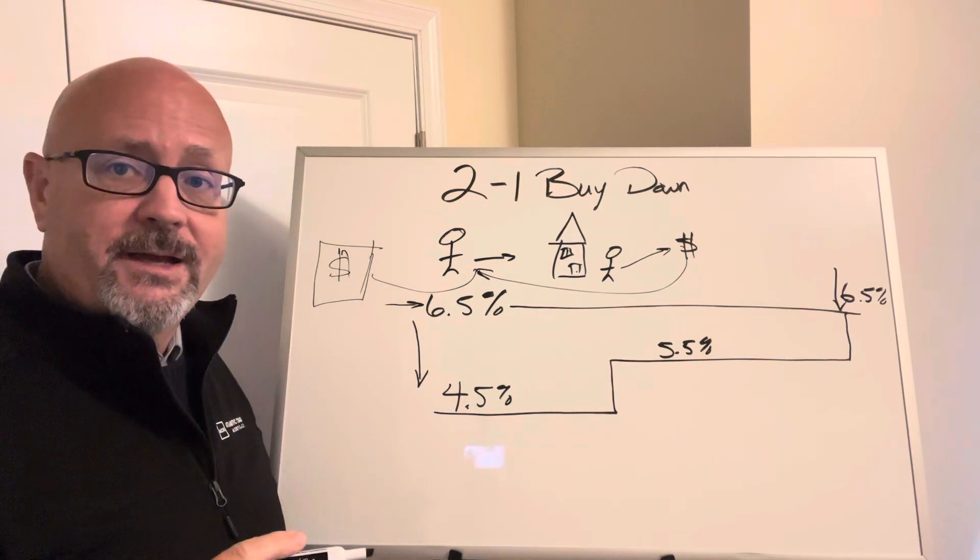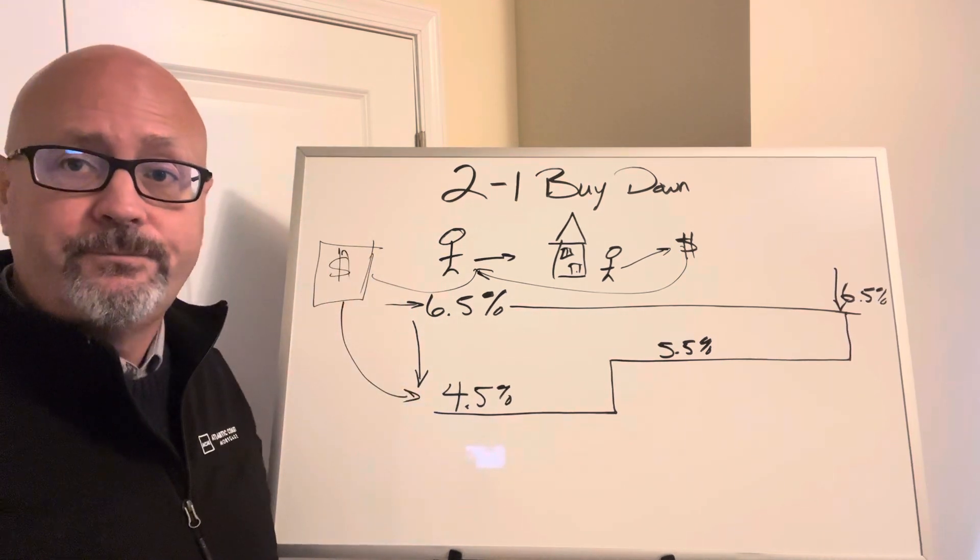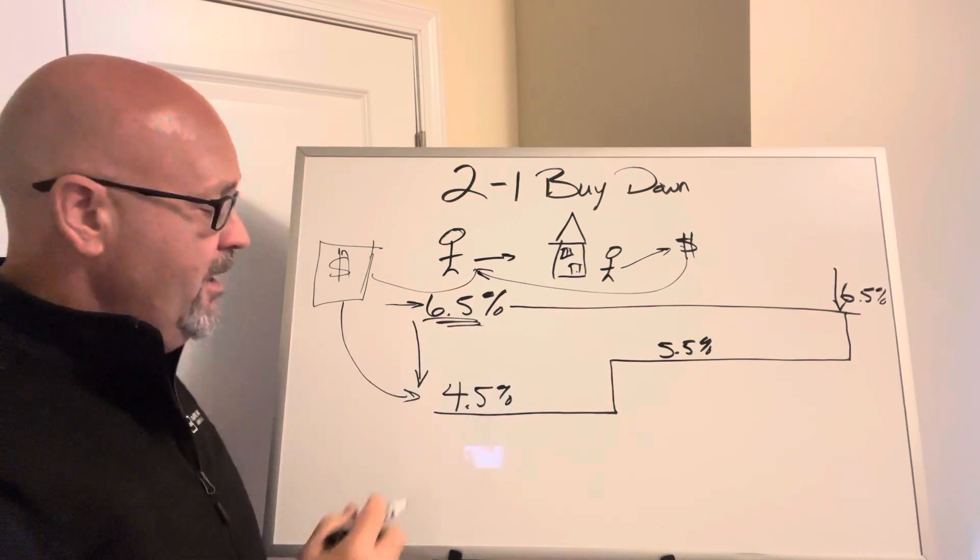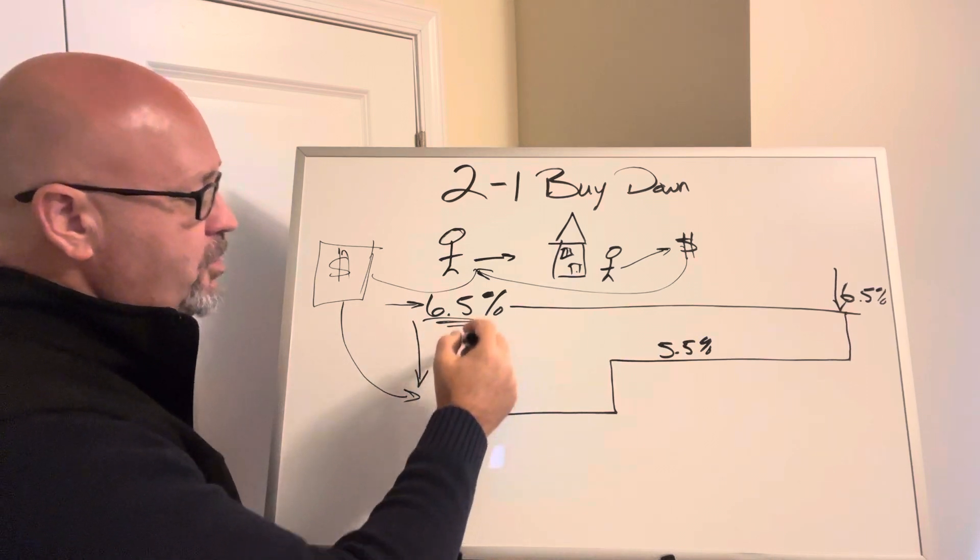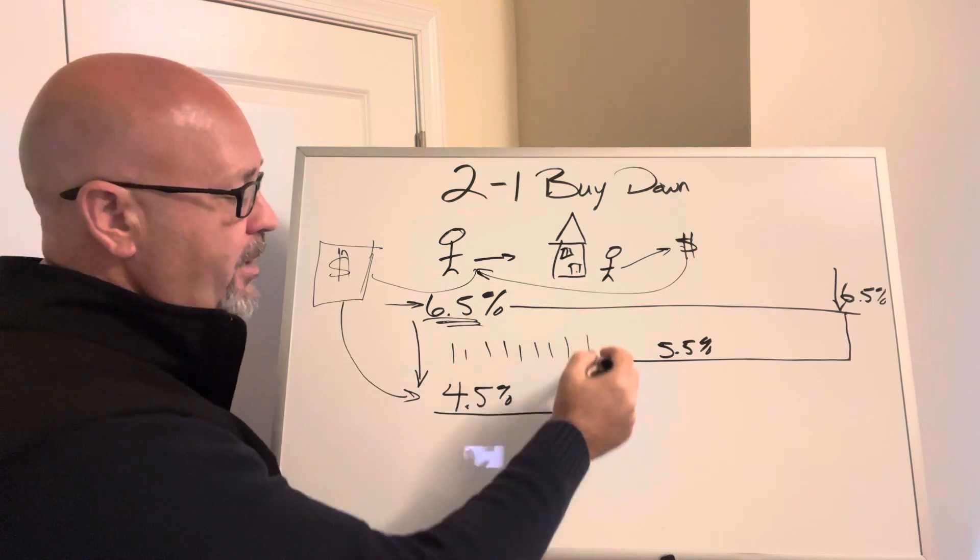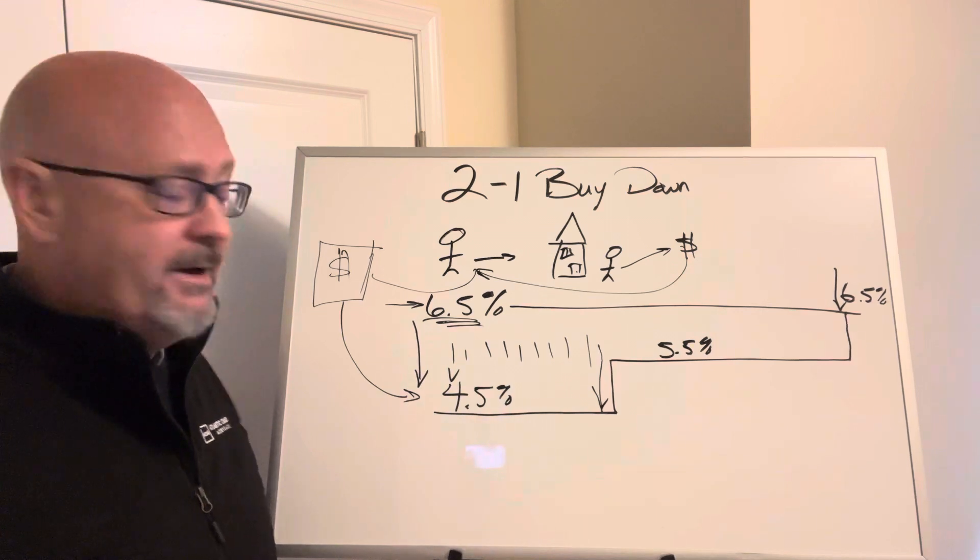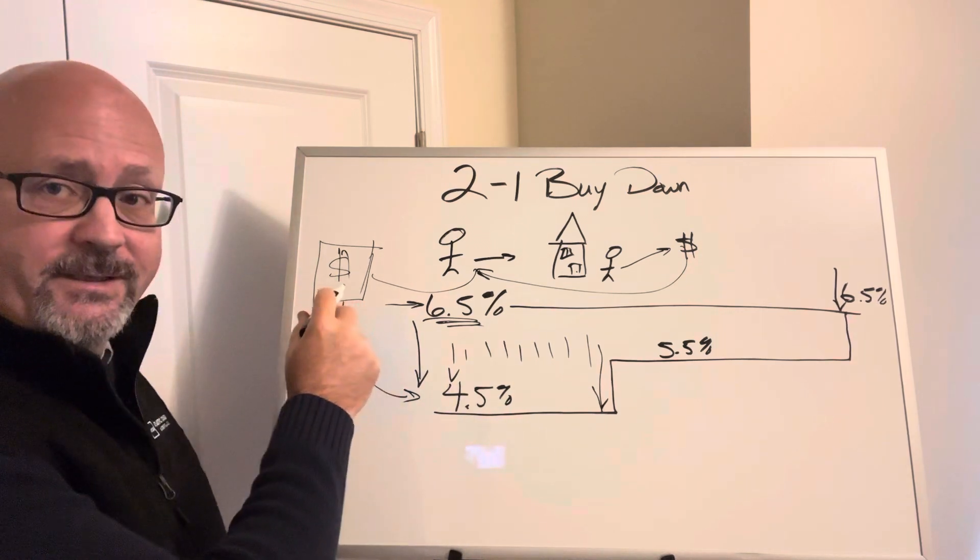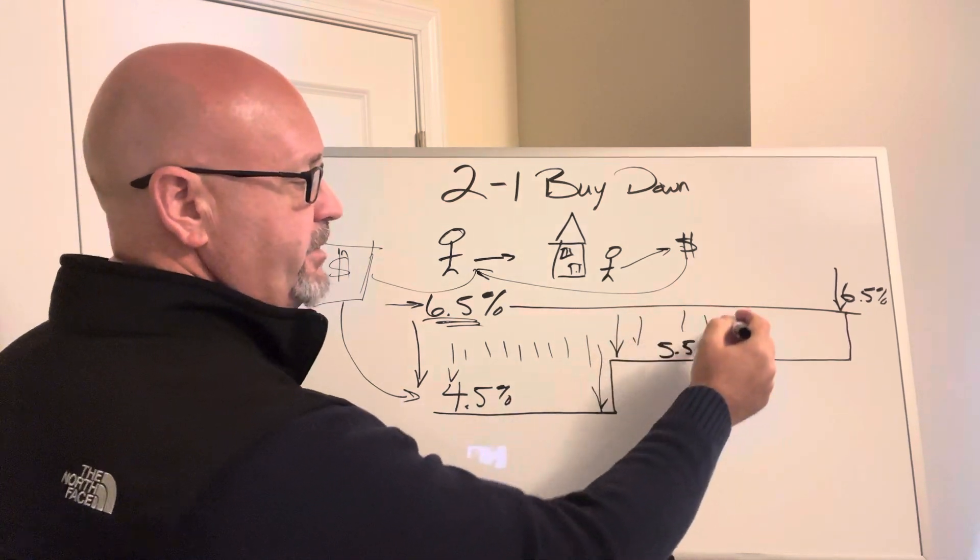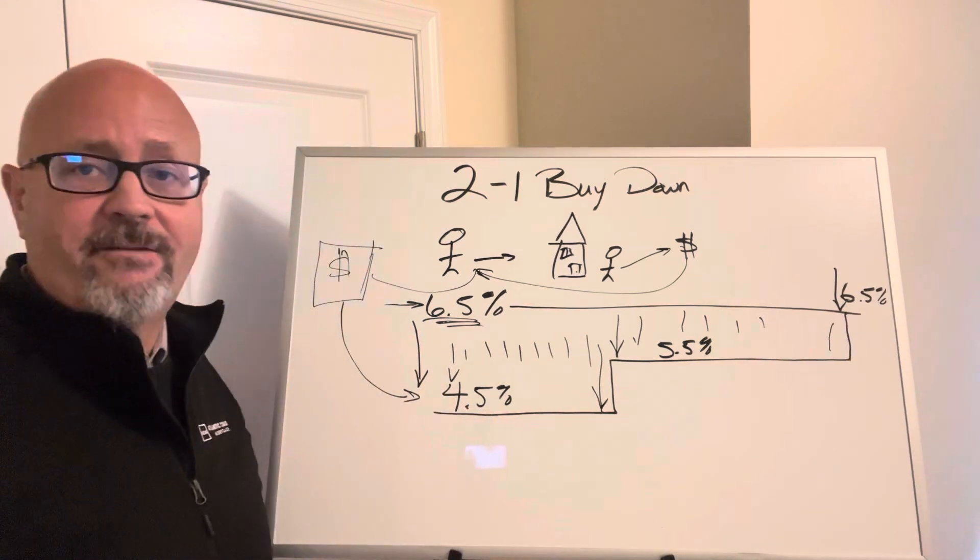The detail with it is that we're going to be using that money to subsidize the payment. So even though the true payment is going to be based off of 6.5%, that money is going to be used every month to make sure that the payments for the first twelve months are going to be at the lower 4.5% range. As that money exhausts itself, we're going to be moving it up to 5.5%, as you're seeing right here, and eventually it will go up to 6.5%.